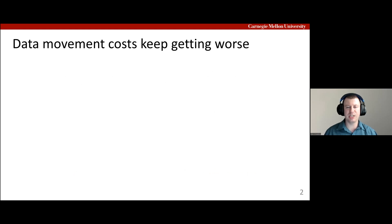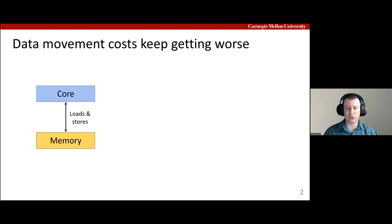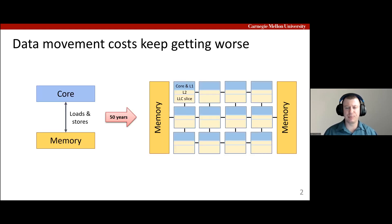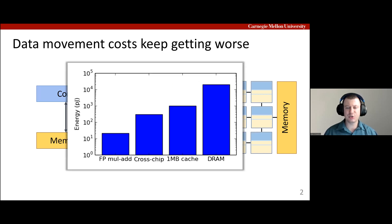Our work is motivated by the increasing cost of data movement. Computer systems have evolved significantly over time, from cores directly accessing memory to complex multi-level distributed memory hierarchies. This has made data movement increasingly expensive. This graph puts energy on log scale for an arithmetic operation and different types of data movement. As you can see, data movement is orders of magnitude more expensive than compute, and the trend is worsening over time.